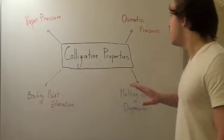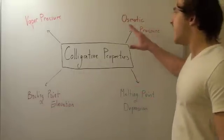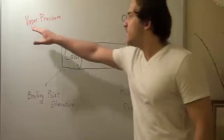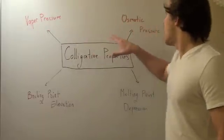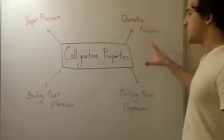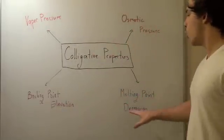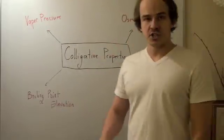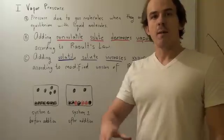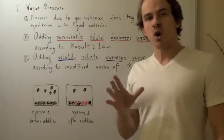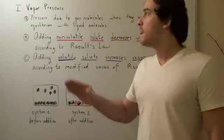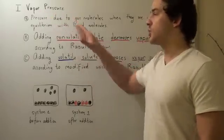Four major colligative properties are known: vapor pressure, osmotic pressure, boiling point elevation, and melting point depression. I'm going to briefly talk about the first colligative property — vapor pressure.